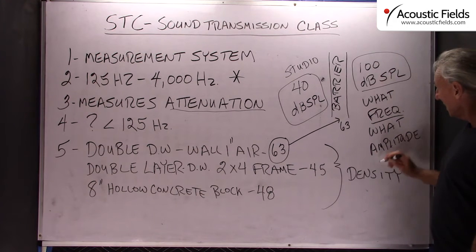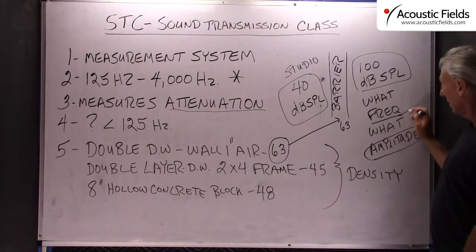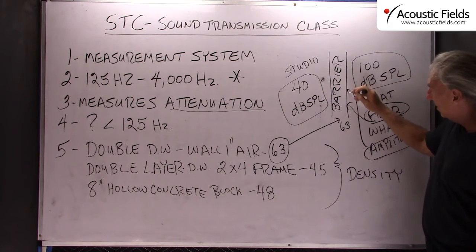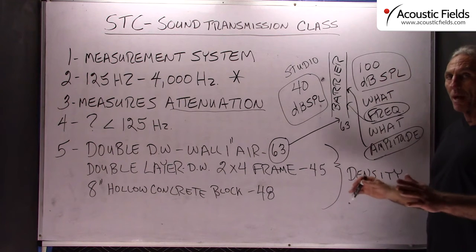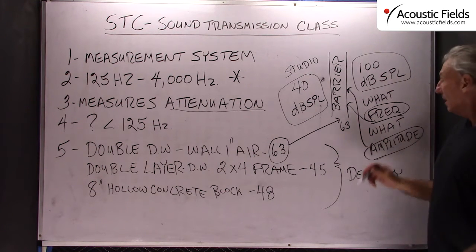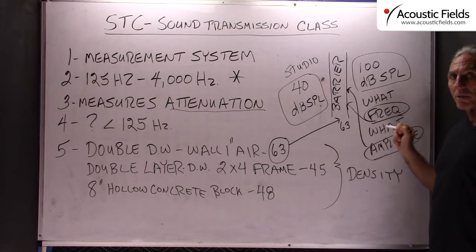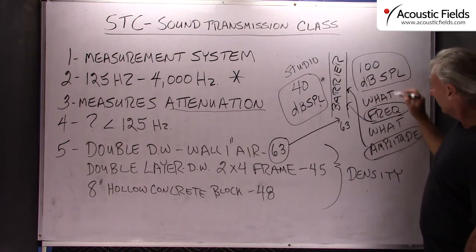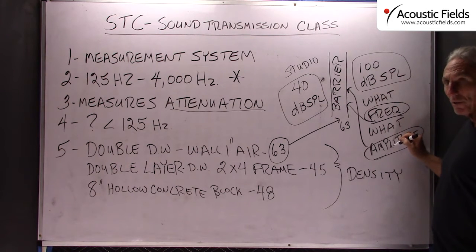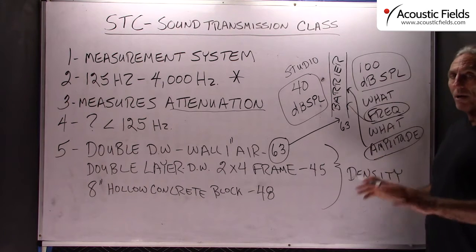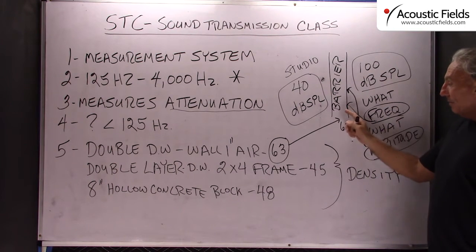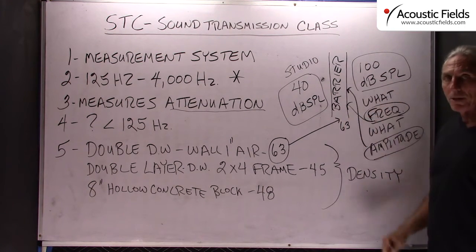So the frequency and the amplitude determine what kind of barrier you build — not because you think a particular barrier would work, but you have to let the measurements of the noise tell you exactly what barrier you use. The lower the frequency and the higher the strength, usually the thicker the barrier. You have to weigh all of these data and make sure that your barrier is data-driven in its construction, or else you won't be happy.